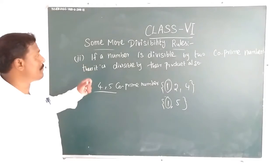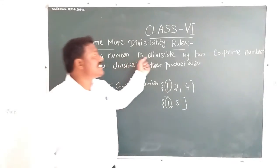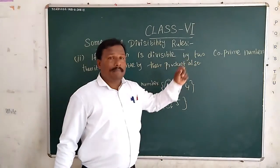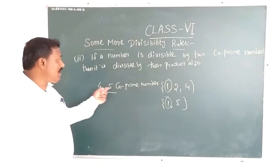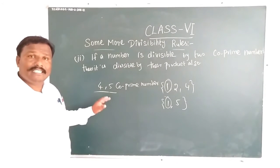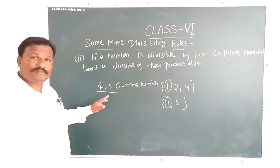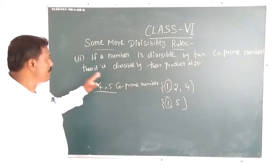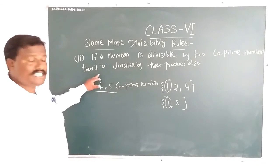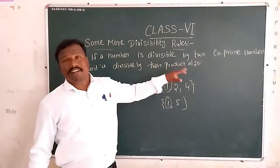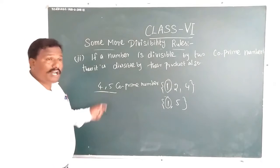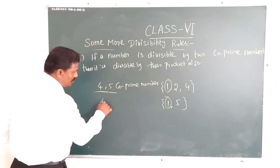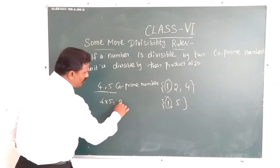So, the rule says: if a number is divisible by two co-prime numbers — for example, 4 and 5 — then it is also divisible by their product. The product of 4 and 5 is 20.